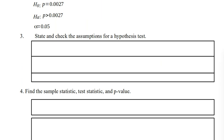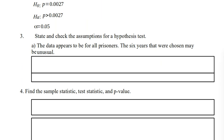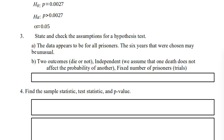The next part requires us to check the assumptions for the hypothesis test. The first requirement is that the data is randomly selected or better representative. In this case, however, it appears to be for all prisoners, Aboriginal and non-Aboriginal. The only issue is why those six years were chosen. The next requirement is that the test is binomial. The first part of that is that there are two outcomes.